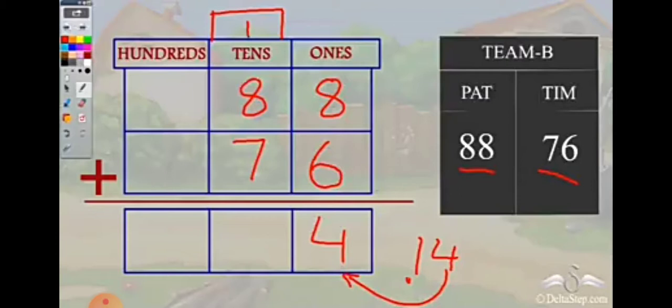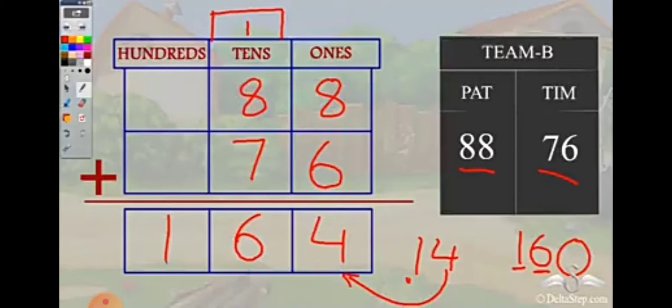Then 8 plus 1 is 9, and 9 plus 7 is 16. So we write 1 and 6. Why is the 1 in the hundreds place? Because 16 means there is a 10 in there, so 1 goes to the hundreds place, giving us 1, 6, 4.